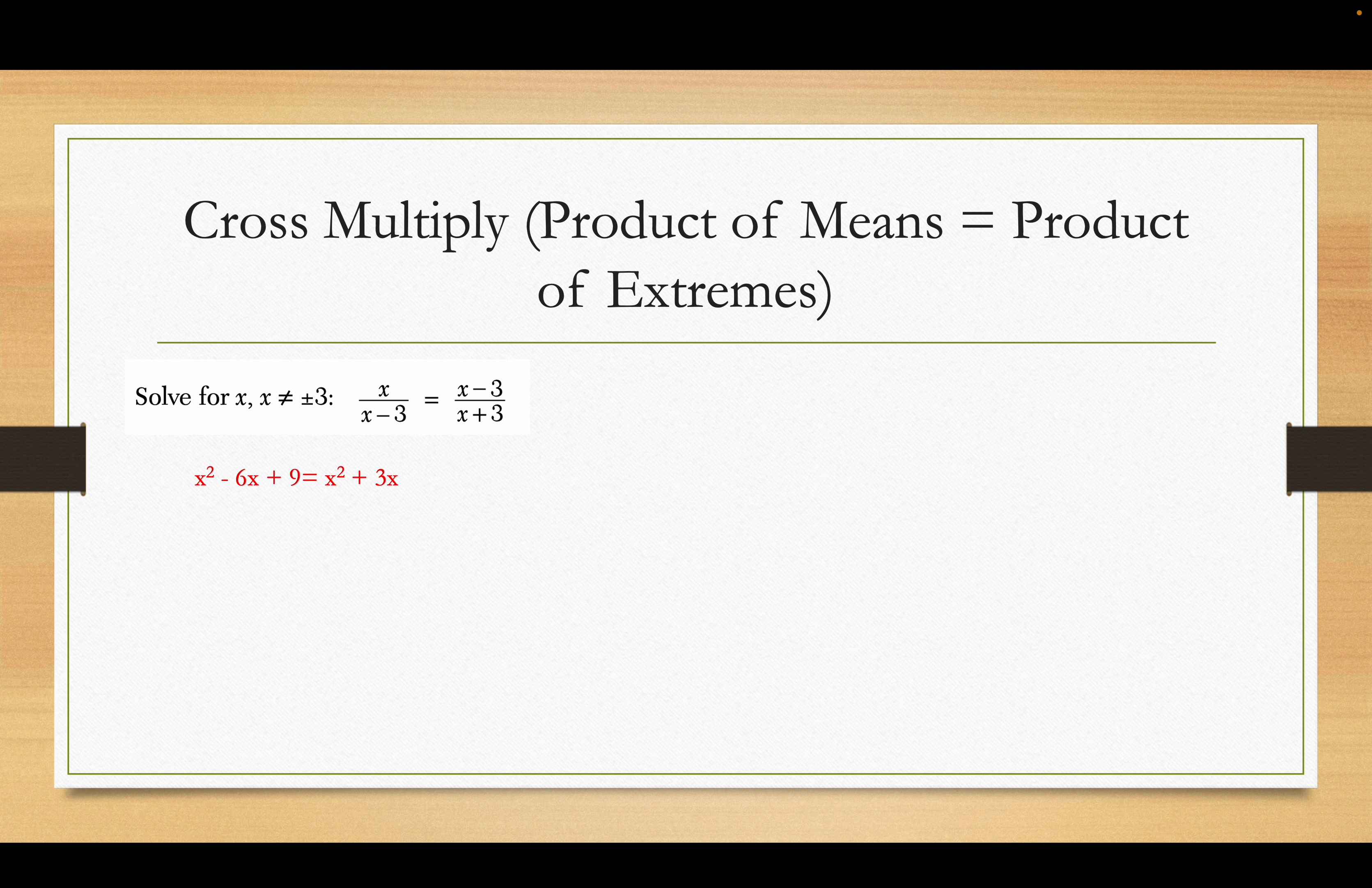Get it all on one side. Oh, look at that. We get the x squareds cancel out. And I get, negative 9x plus 9 is 0. Subtract 9 from both sides. I get x is negative 1. And that's the correct solution.